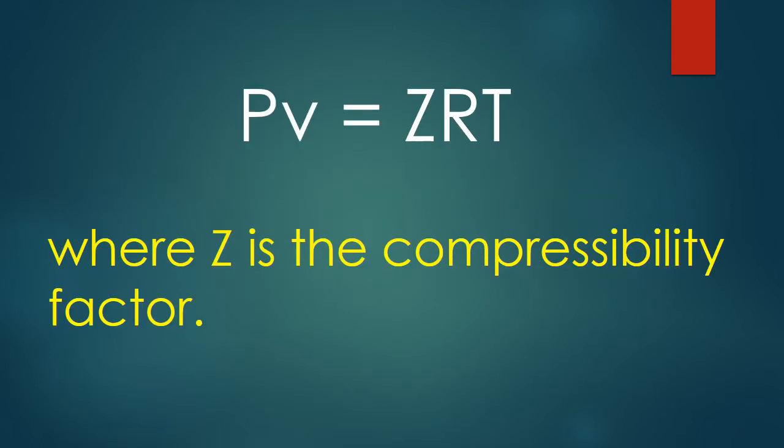The PVT behavior of real gases is expressed by more complex equations of state, or by PV = ZRT, where Z is the compressibility factor.